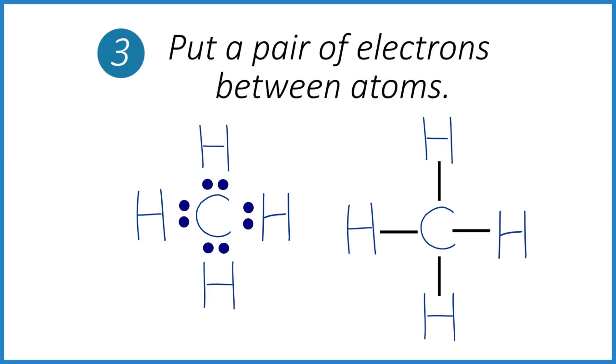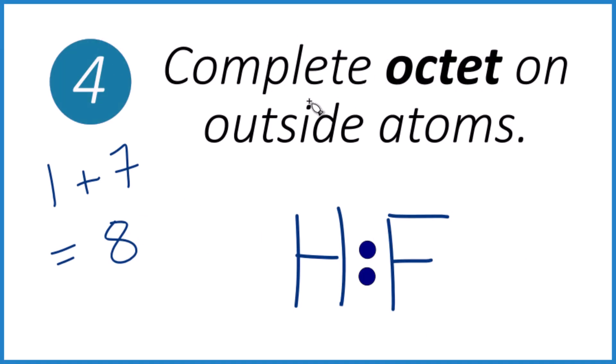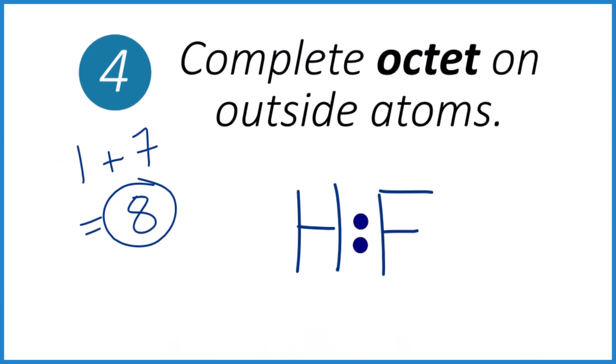So step four. We're going to complete the octet on the outside atoms. We're going to fill their outer shells. So we counted that we had eight valence electrons. We used two to form the chemical bond. And here's an important rule. Hydrogen again.